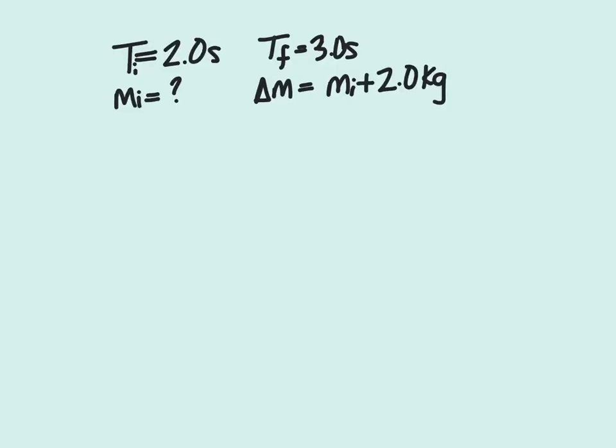In this problem, there is a spring that's oscillating with a period of 2 seconds with a block of mass m attached to it. Then when this mass is increased by 2 kilograms, the period changes from 2 seconds to 3 seconds.